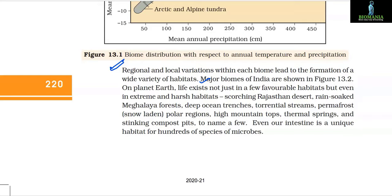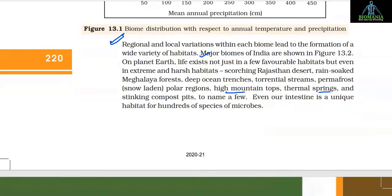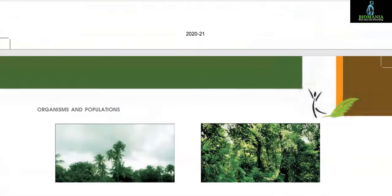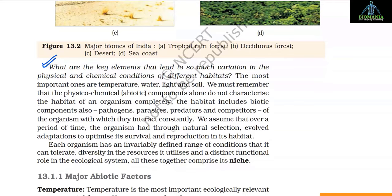On planet Earth, life exists not just in a few favorable habitats but even in extreme and harsh habitats: scorching Rajasthan desert, rain-soaked Meghalaya forest, deep ocean trenches, torrential streams, permafrost in snow-laden polar regions, high mountain tops, thermal springs, and stinking compost pits. Even our intestine is a unique habitat for hundreds of species of microbes. The key elements that lead to variation in physical and chemical conditions of habitats are temperature, water, light, and soil.